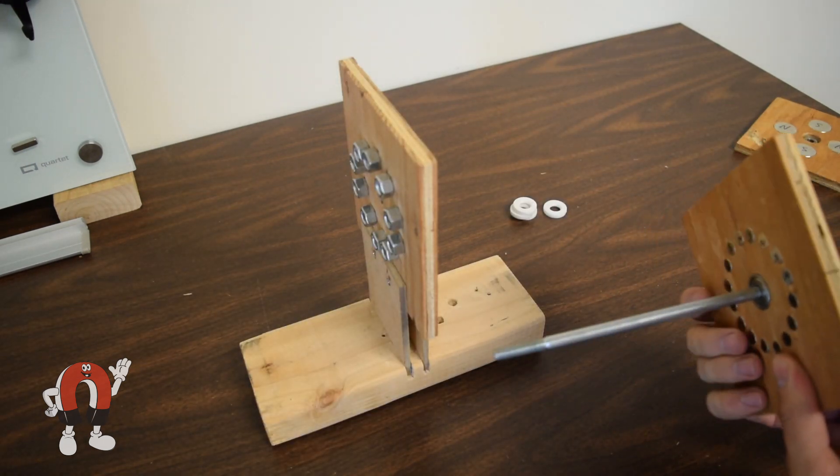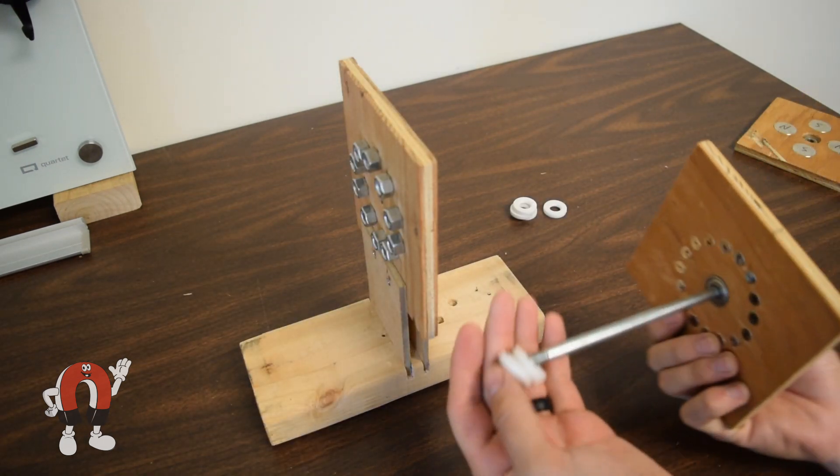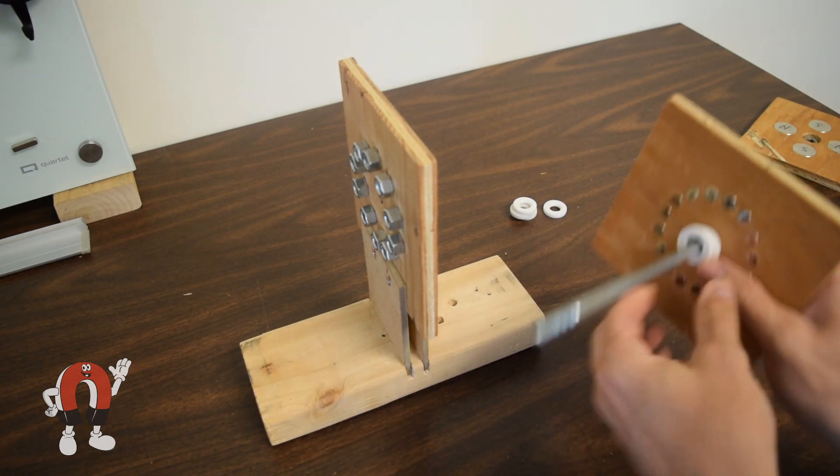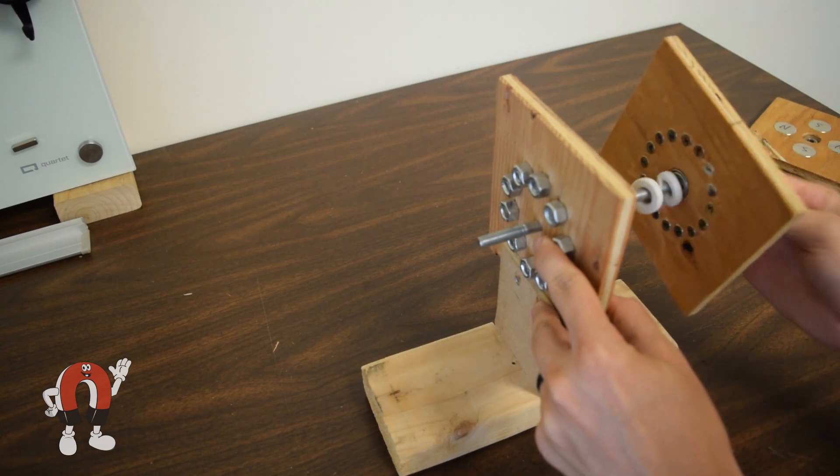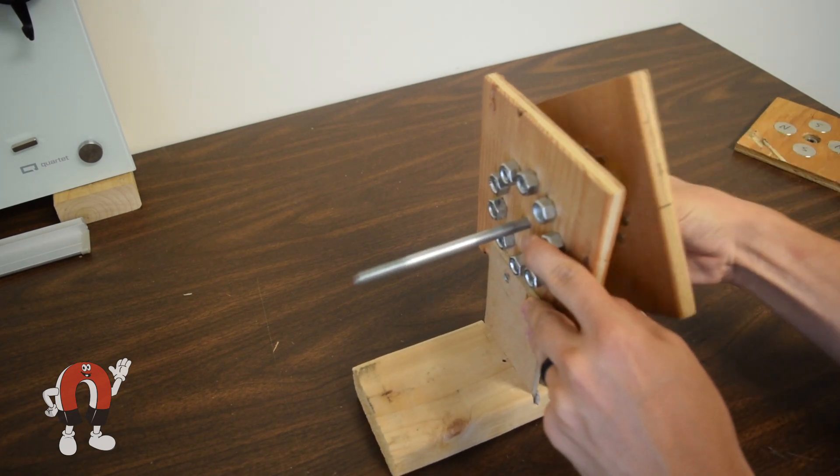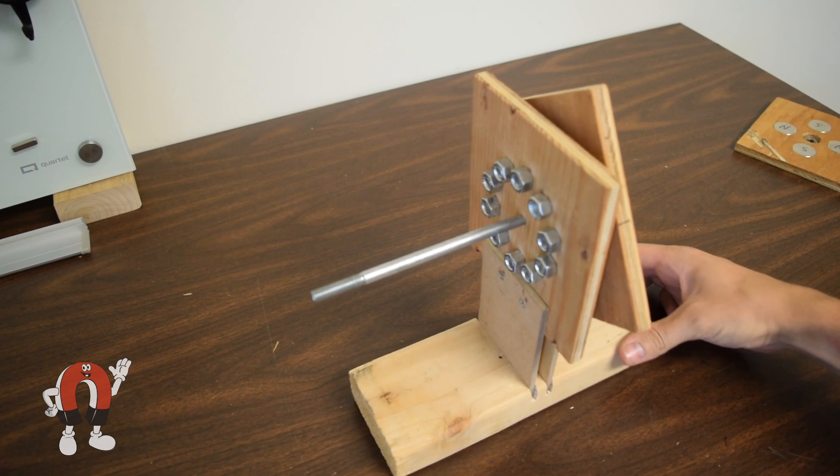First, we'll put the low-speed gear on to see how it works. We need some plastic spacers to keep the magnets from directly touching the stators. As the magnets spin, it will temporarily magnetize the bolts in the same direction as the magnets.